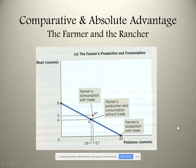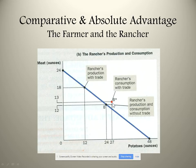Here's the farmer's production and consumption with trade. He's consuming at point A, which actually exceeds his production possibilities curve. He can't produce at point A, but he can consume there by specializing. The rancher is also exceeding his production possibilities by specializing.